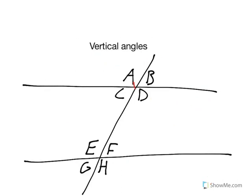Angles A and D, and B and C, are vertical angles, therefore congruent. Angles F and G, and E and H, are also vertical angles, therefore congruent.